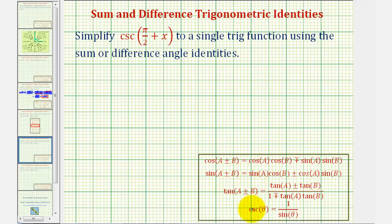But remember, cosecant theta equals one divided by sine theta, so we can write cosecant in terms of sine and then use this identity here.